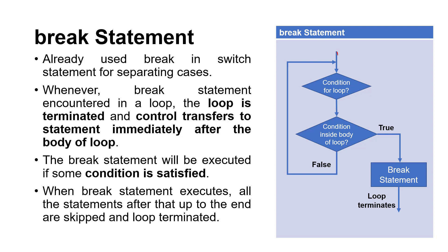For example, our program control is first given to the condition — the condition available inside the loop. If we are using a for loop, then the condition available inside the for loop is checked. If it is true, then control passes inside the body of the loop. Now inside the body of the loop there is a condition, and if this condition is true then control is given to the break statement, and if the break statement is executed, the loop will terminate.